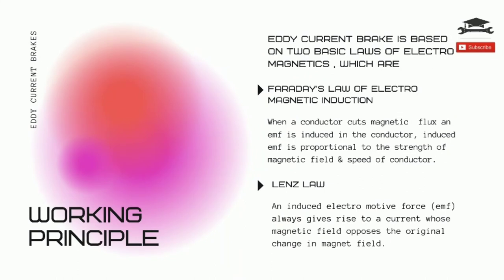Faraday's law of electromagnetic induction states that when a conductor cuts magnetic flux, an EMF is induced in the conductor. The induced EMF is proportional to the strength of the magnetic field and speed of the conductor. And Lenz's law defines that an induced electromotive force always gives rise to a current whose magnetic field opposes the original change in magnetic field.